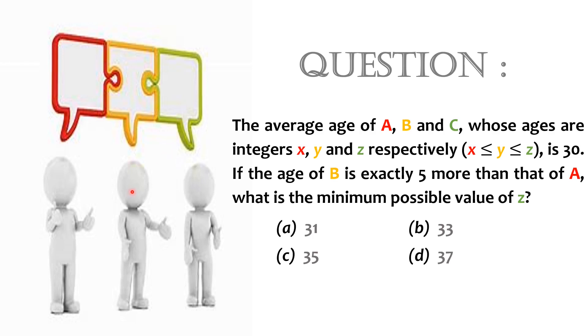If the age of B is exactly 5 more than that of A, what is the minimum possible value of Z? Options: A 31, B 33, C 35 and D 37. Solution.